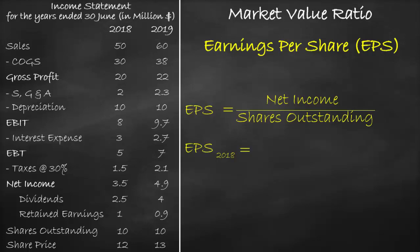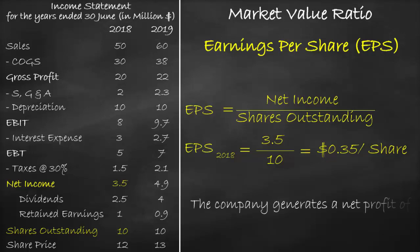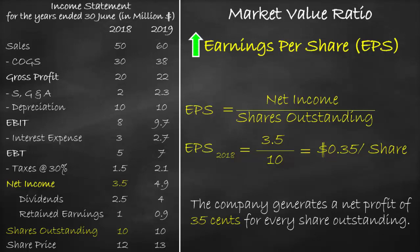Net income equals 3.5 million divided by shares outstanding of 10 million, which equals 0.35 dollars per share. The unit of earnings per share is dollars per share. This means that the company generates a net profit of 35 cents for every share outstanding. The higher the earnings per share, the better.